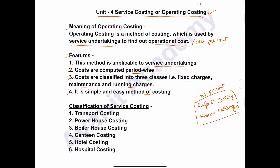Next, we see the classification of service costing. Number one: transport costing. Number two: powerhouse costing. Number three: boiler house costing. Number four: hotel costing. Number five: hospital costing. In this chapter, we will study transport costing, boiler house costing, and canteen costing, and we will solve 15-mark problems on these topics.